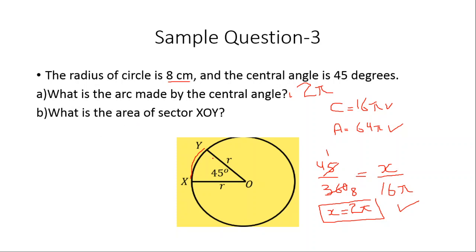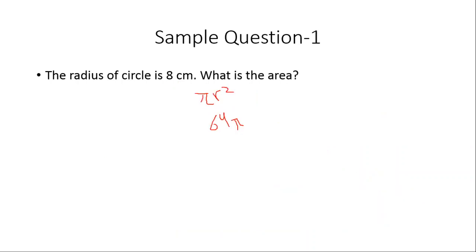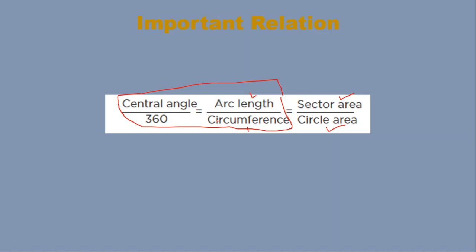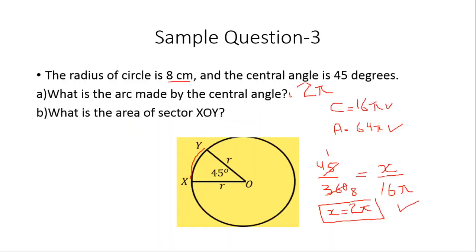The second part: what is the area of sector XY? To find the sector area, we use the relationship: central angle divided by 360 equals sector area divided by circle area. We know the central angle is 45 and the total angle is 360.